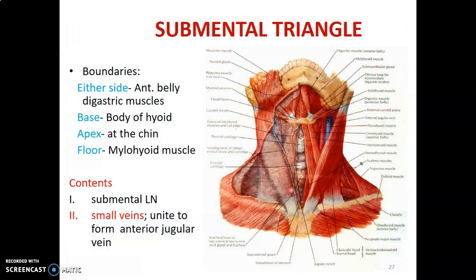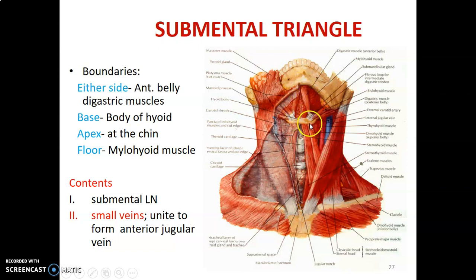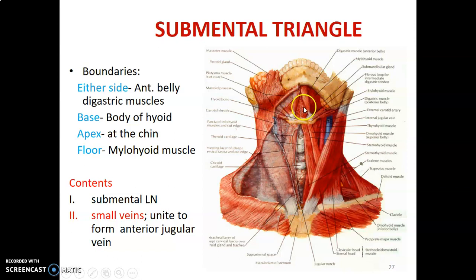The submental triangle: its boundaries are the anterior belly of the right and left digastric on both sides, the base formed by the body of the hyoid bone, and the apex at the chin. The floor is formed by the mylohyoid muscle. The contents of the submental triangle are the submental lymph nodes and small veins that unite to form the anterior jugular vein.